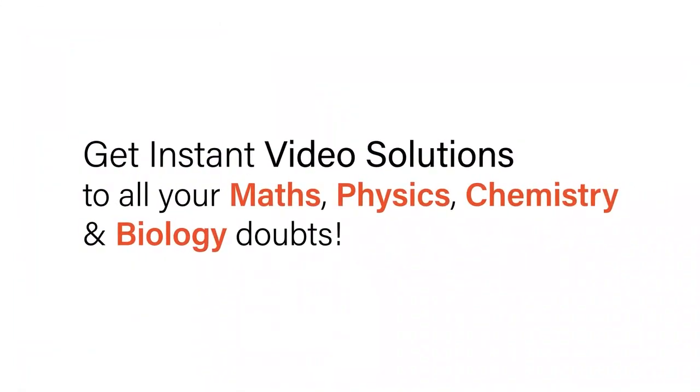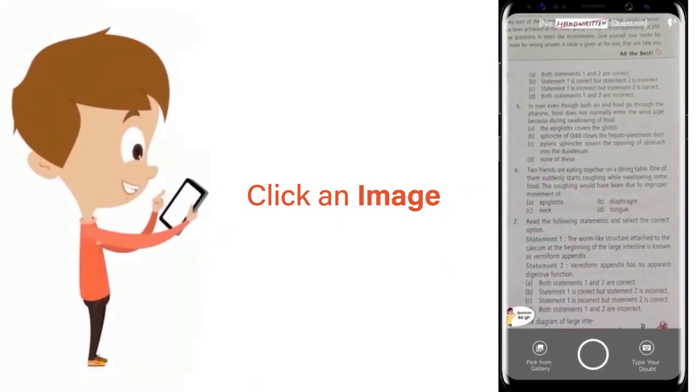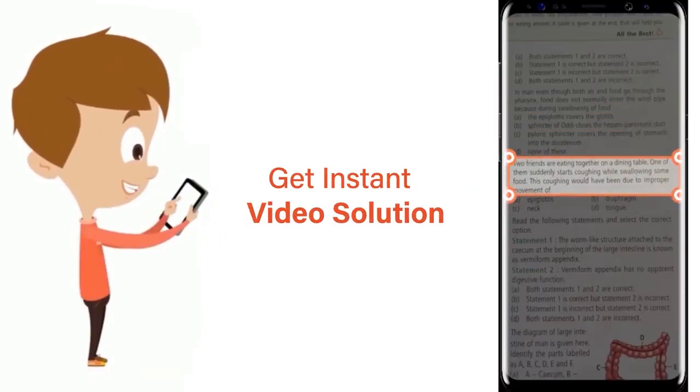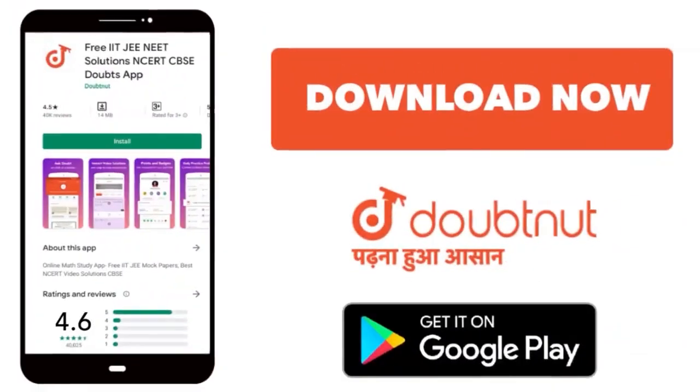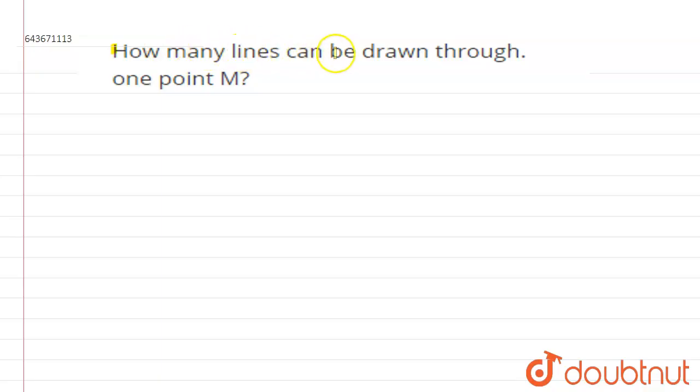With Doubtnet, get instant video solutions to all your maths, physics, chemistry, and biology doubts. Just click the image of the question, crop the question, and get an instant video solution. Download Doubtnet app today. How many lines can be drawn through one point M? So in this statement, we have to find out how many lines we can draw through a point M.